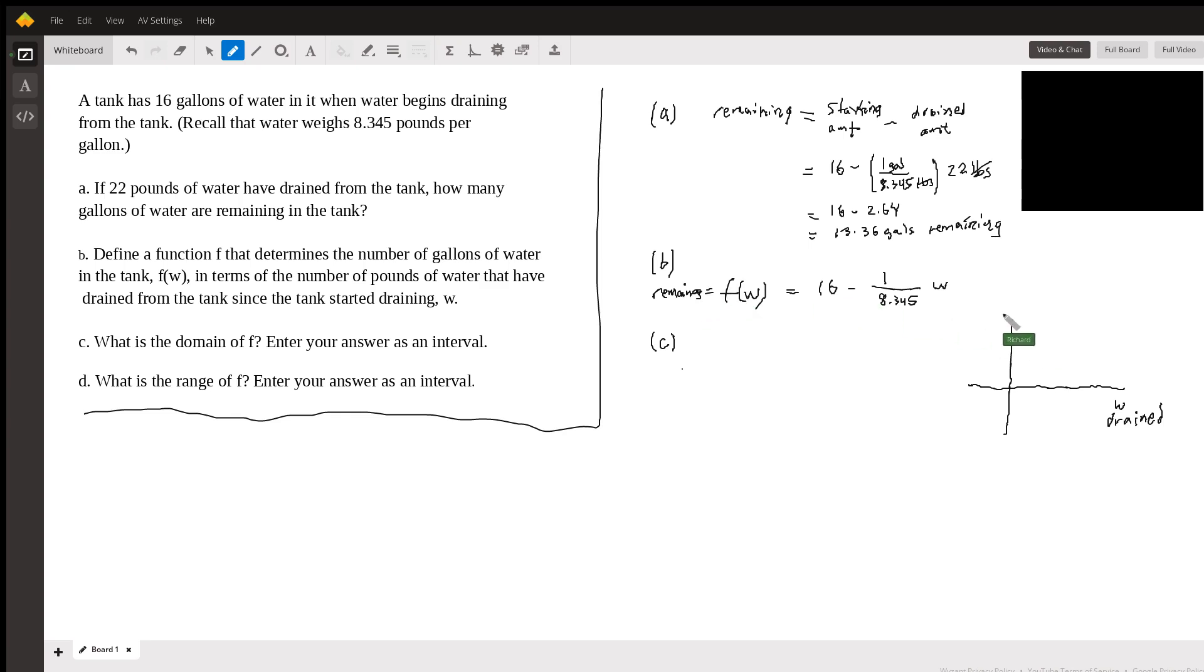And so there's F of W here. Well, when you drain nothing, when W is zero, you drain nothing, absolutely nothing, you're left with that tank that started at 16. And eventually, you're going to get down to the point where there's nothing remaining in the tank. Obviously, that's when you drained 16 gallons. But W is in terms of pounds.